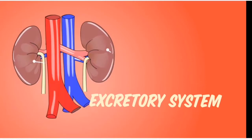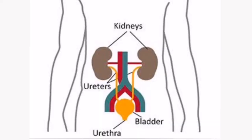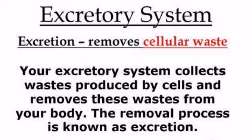Next, coming to the excretory system. The organs involved in the excretory system are kidney, ureters, urinary bladder and urethra. The excretory system helps in removing waste products from our body. The process that involves removing waste from the body is called excretion.